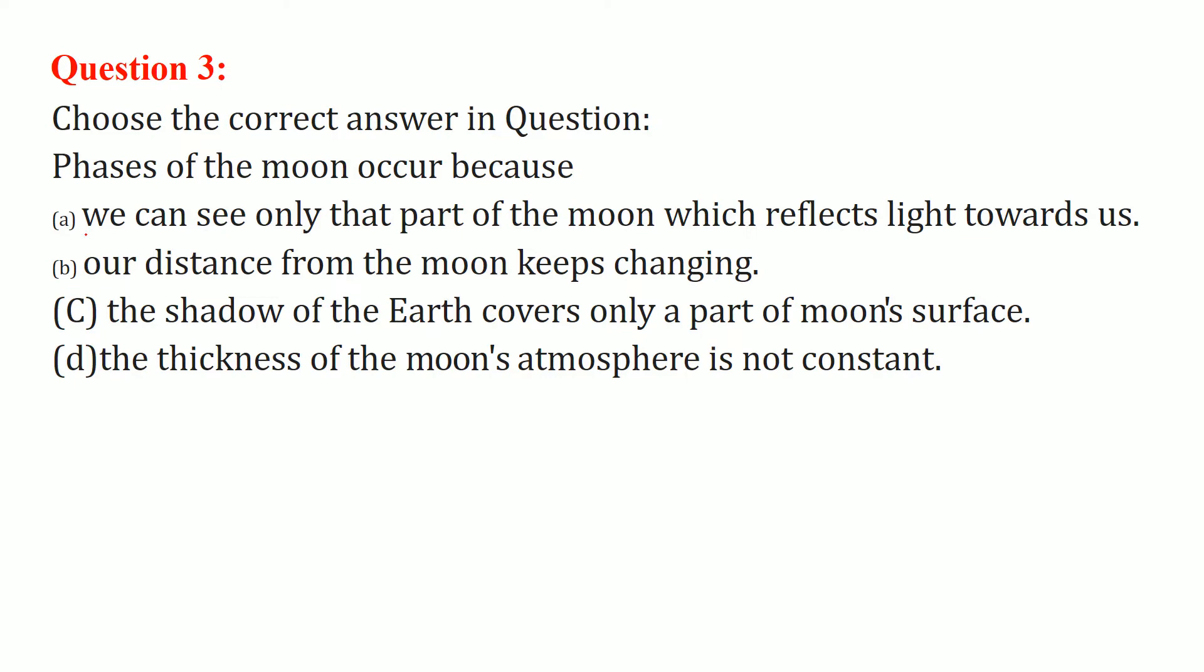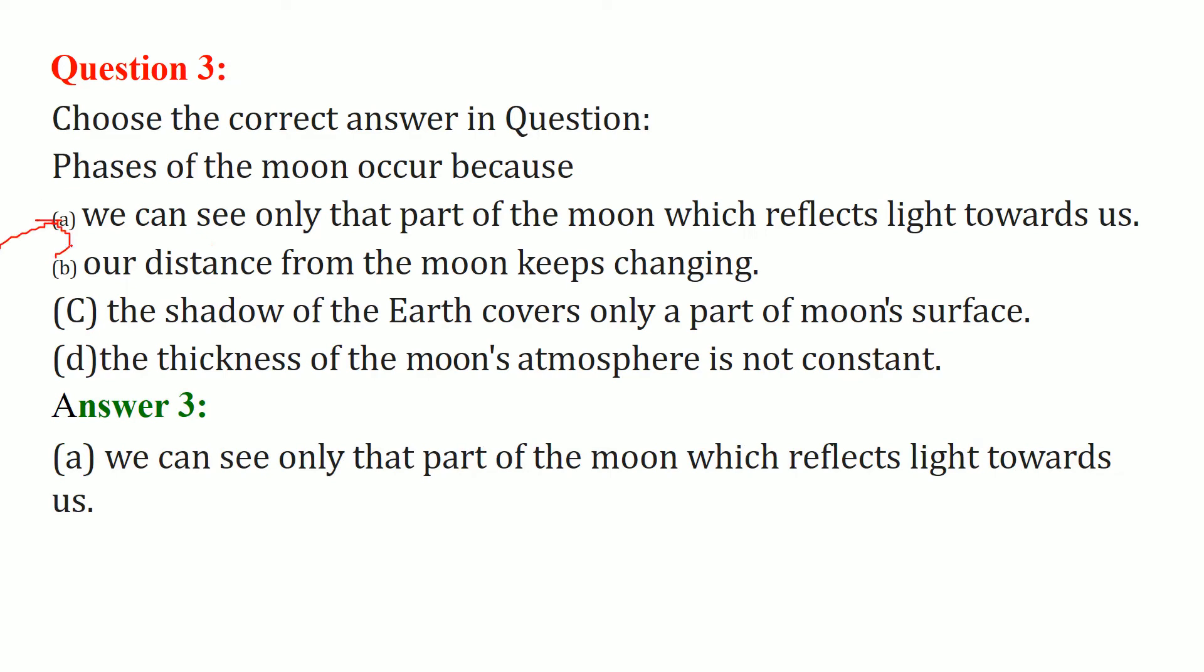Choose the correct option. Phases of the moon occur because, if this is the moon, we can only see a part, this part or this part, which reflects light towards us. So we can see only the part of the moon which reflects light towards us.